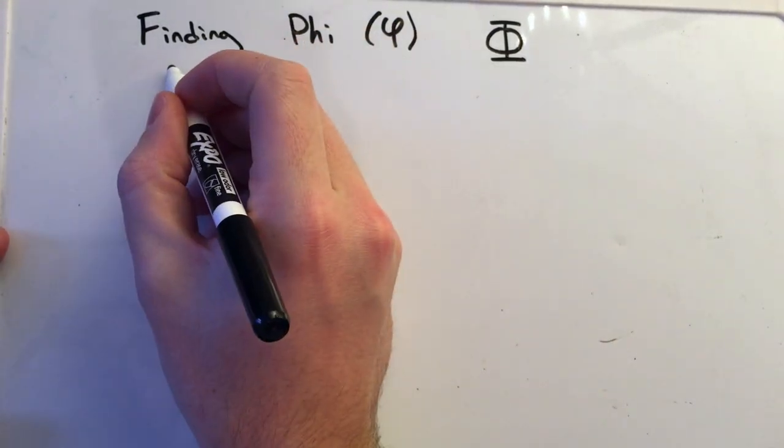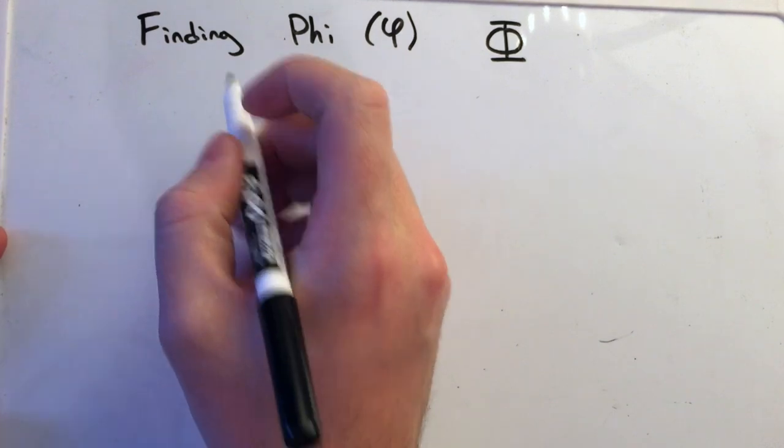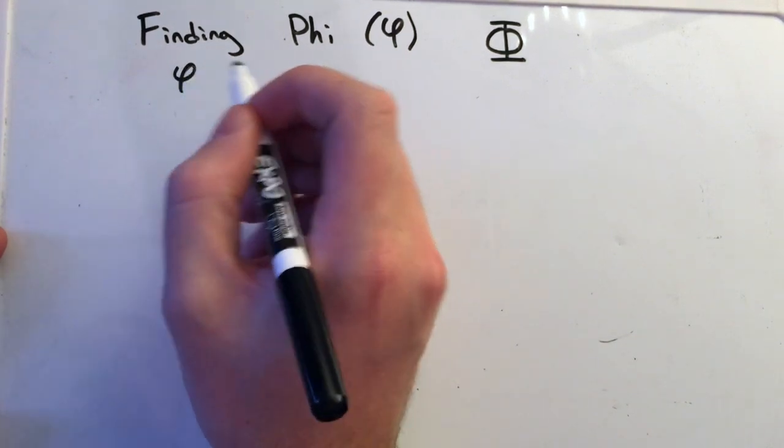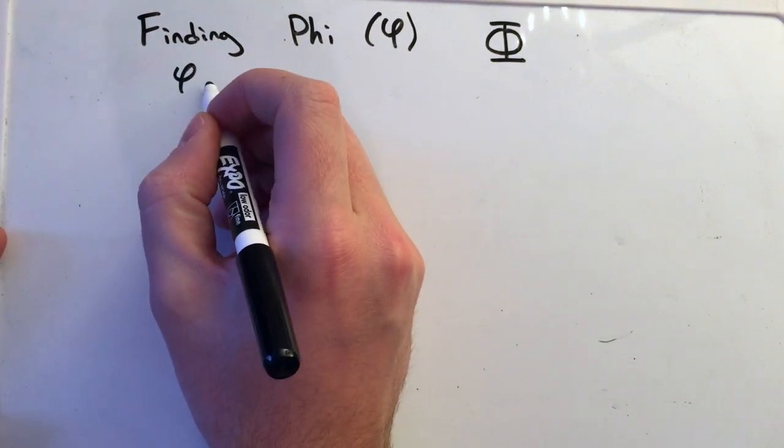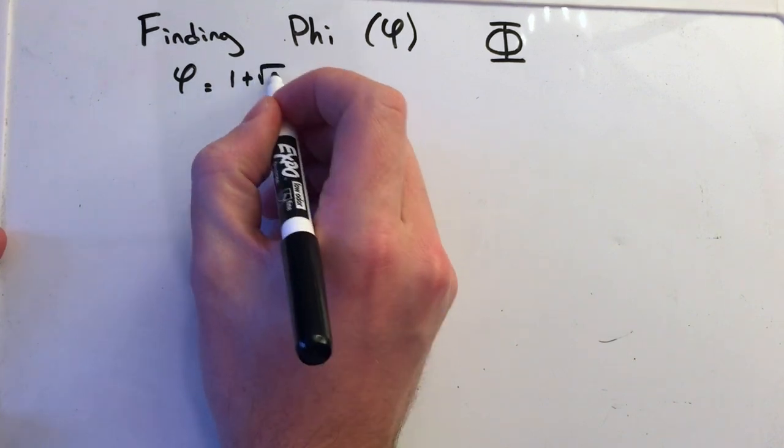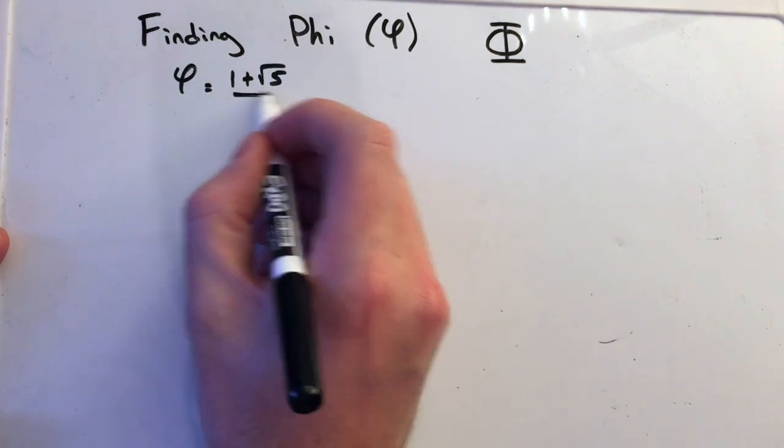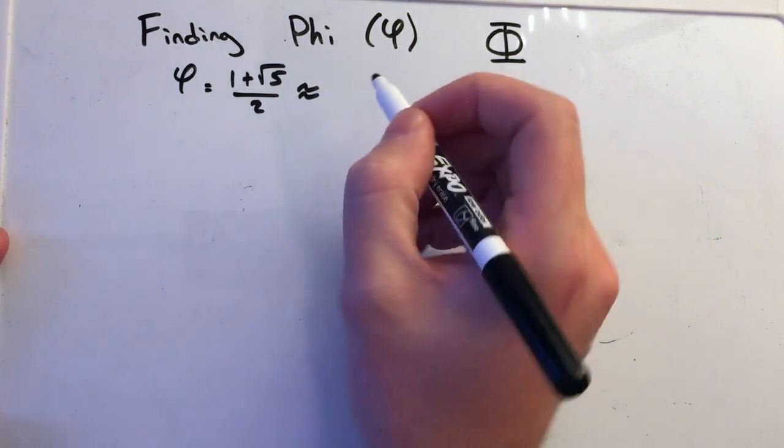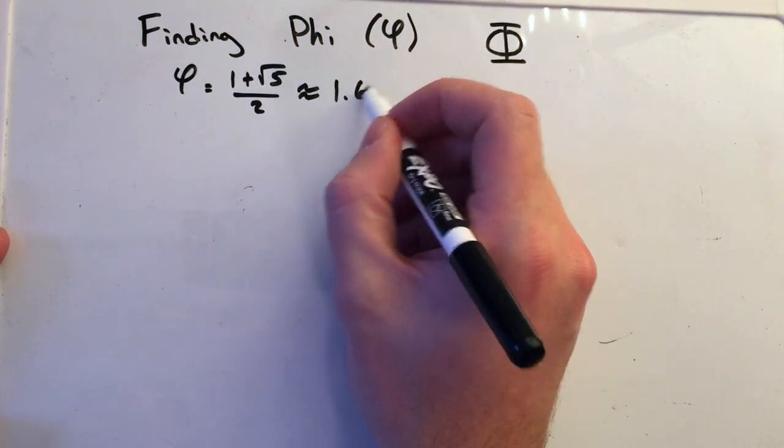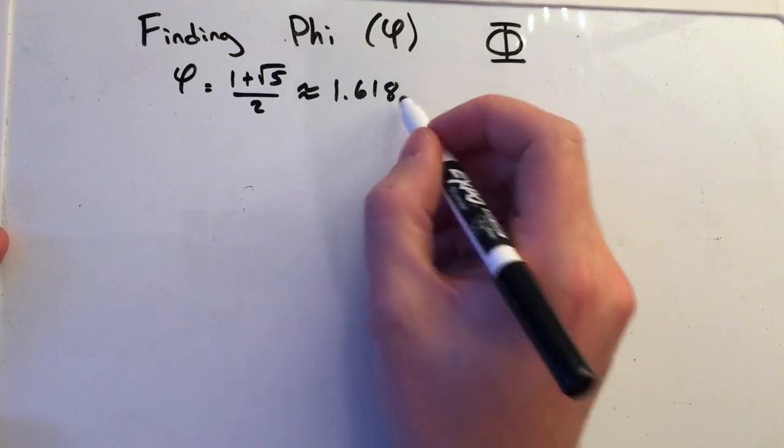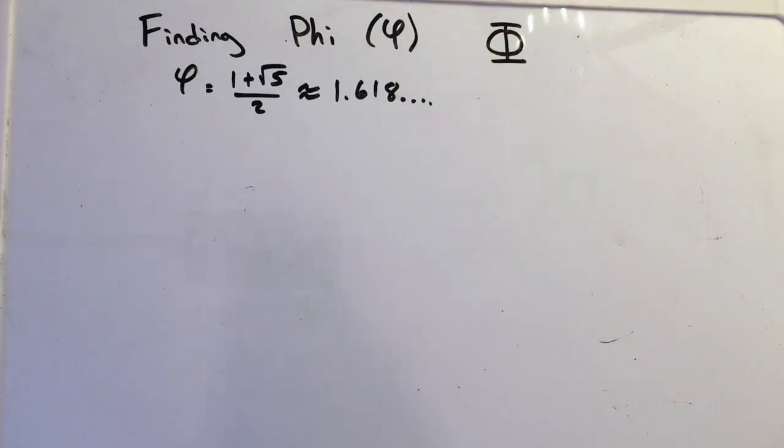So phi itself, now if I can draw, here's the lowercase and uppercase letter of phi. Phi itself, now bear with my phi drawing, is equal to one plus the square root of five over two, which is approximately 1.618. And it keeps on going forever. It's irrational.